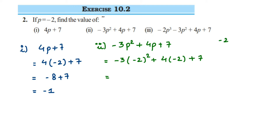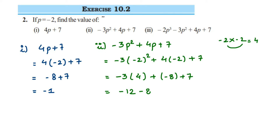So minus 2 into minus 2: 2 times 2 is 4, and minus into minus is plus, so we will get 4 here. So minus 3 into 4, plus 4 into minus 2 is minus 8, plus 7. Multiply minus 3 and 4 — it is minus 12, then minus 8, then plus 7. First solving the first two integers: minus 12 and minus 8, minus minus becomes plus, so we add them. 12 plus 8 is 20, and the sign will be negative because 12 is greater, so it is minus 20, then plus 7.